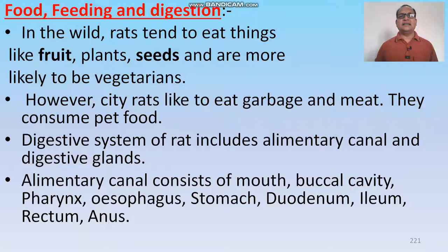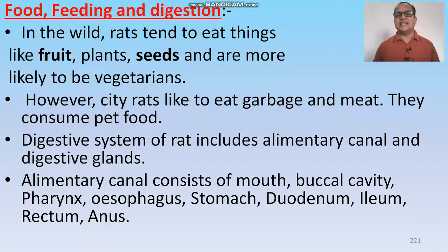In the wild, rats tend to eat fruit, plants, and seeds, and are more likely to be vegetarian. However, city rats are not vegetarian — they can eat garbage and meat as well. They also consume pet food. The digestive system of rats includes the alimentary canal and digestive glands.